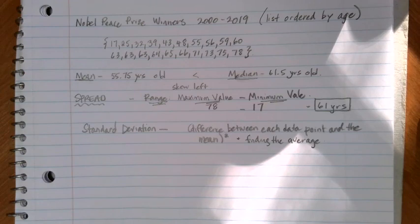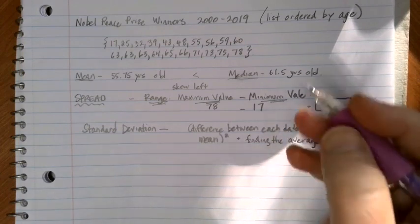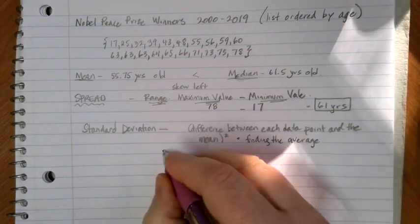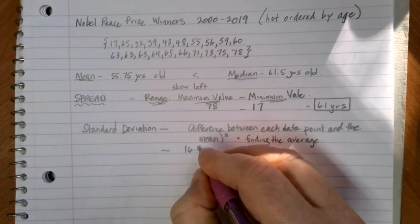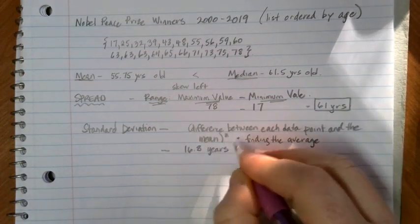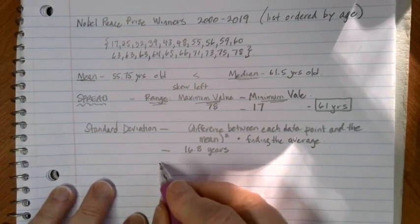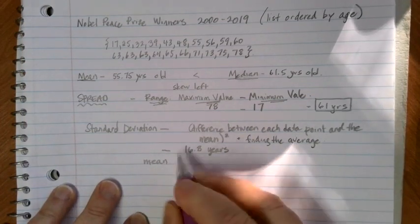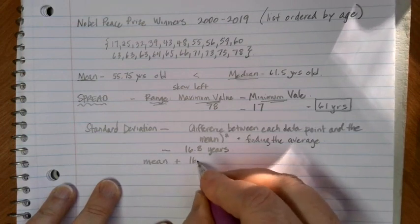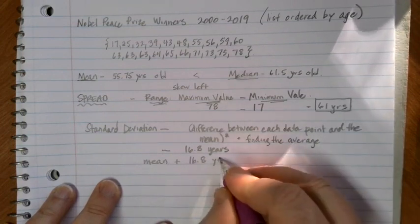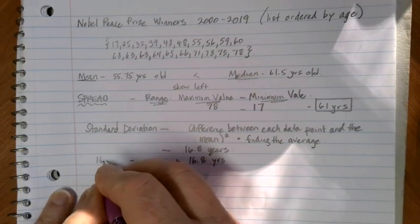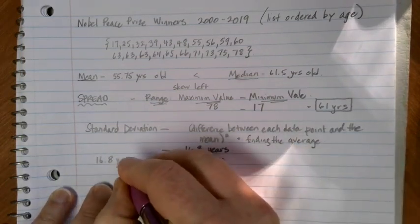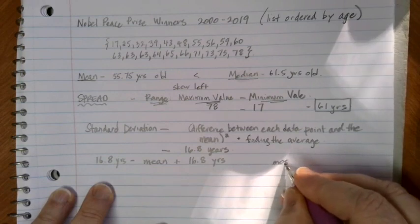In this case, if we were to do that for our current data set, we would end up with 16.79, let's call it 16.8 years. What this tells us is if we have our mean in the middle, if we add 16.8 years on one side and subtract 16.8 years on the other side, most of the data would lie in between those values.